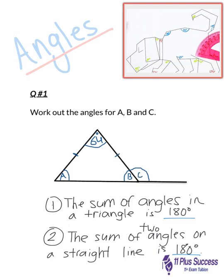Number two. On a straight line, the sum of the angles is 180 degrees.